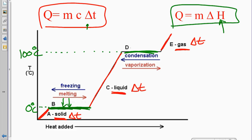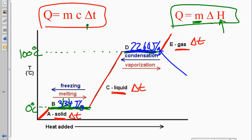This is a given. M is still mass, and delta H — if you are talking about either melting or freezing, that number is 334 joules per gram. If you are talking about condensing or vaporization, that's 2,260 joules per gram. You multiply your mass times your delta H to figure out how much energy it took to boil, vaporize, condense, freeze, or melt your specific amount of water.